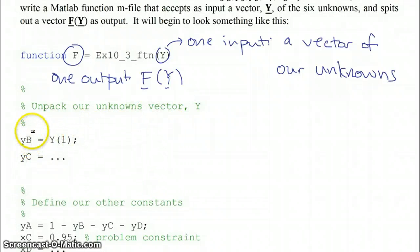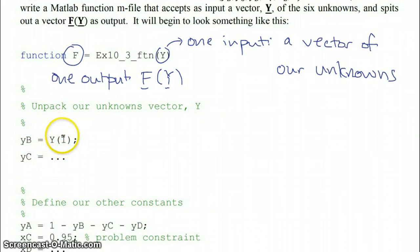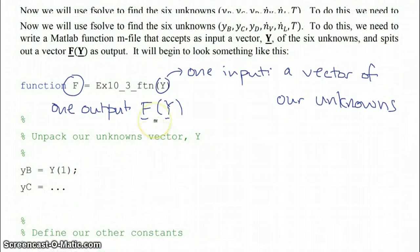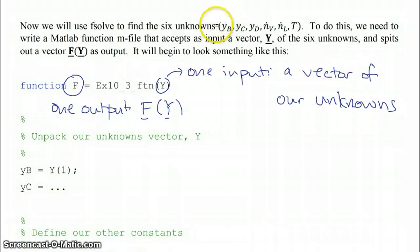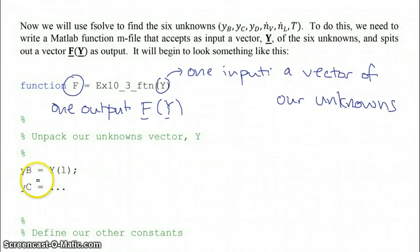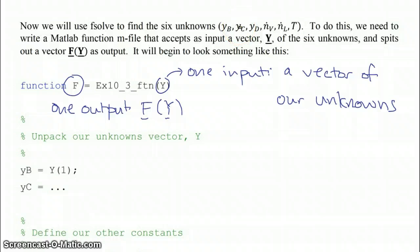We want to define each individual variable as each individual element of y. For example, YB was the first element of the vector, so we say YB equals Y(1), and so on. By doing that, we unpack our vector of unknowns into our six different unknowns, so we can write our equations more transparently.